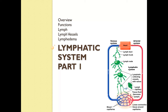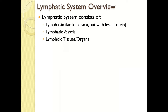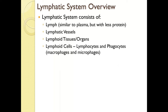In this section we'll look at the lymphatic system — its overview, functions, composition of lymph, different types of lymph vessels, and lymphedema. The lymphatic system picks up excess fluid released from capillaries and returns it to the bloodstream — kind of like a detour that some blood fluid goes through. The lymphatic system consists of lymph (similar to plasma but with less protein), lymphatic vessels, lymphoid tissues and organs, and lymphoid cells including lymphocytes and phagocytes — both macrophages and microphages.